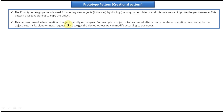This pattern is used when creation of an object is costly or complex. For example, an object is to be created after a costly database operation. We can cache the object and return its clone on the next request. Once we get the cloned object, we can modify it according to our needs.